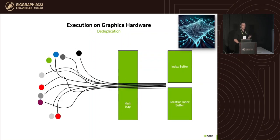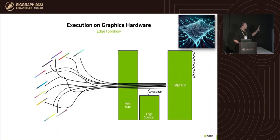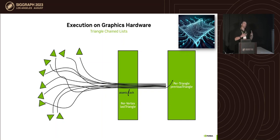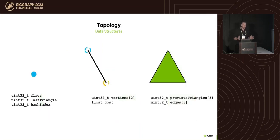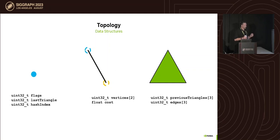All this is executed massively on the GPU in a few passes. The edge table grows over time, and the triangle linked list connections to vertices all happen in a massively parallel way. As a result, we have vertices with discontinuity flags, the last triangle index per vertex, hash indices for edges, edge cost/length, vertex data, and for triangles the linked-list information connecting them to edges.